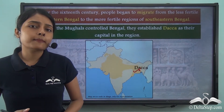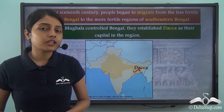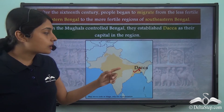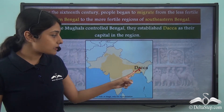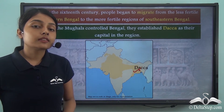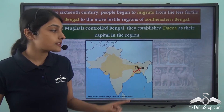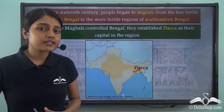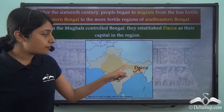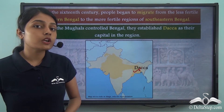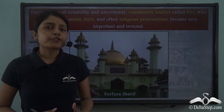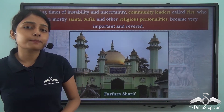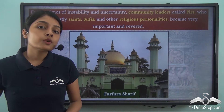Now whenever any kingdom, any empire, any dynasty spreads its control over any region, it makes sure to spread its religion in that region as well. Likewise when the Mughals established Dhaka as the capital of this region, they wanted to ensure the establishment of several religious institutions here. This brings us to a very important discussion on religious institutions that came into being in different parts of Bengal when the Mughals were ruling. For the purpose of furthering their faith and religion, many new shrines were set up and established in different parts of Bengal.